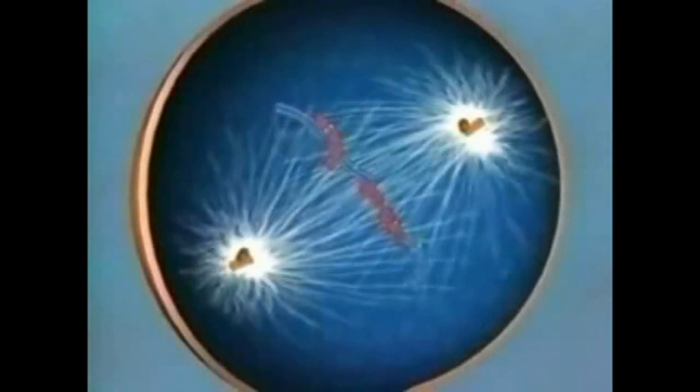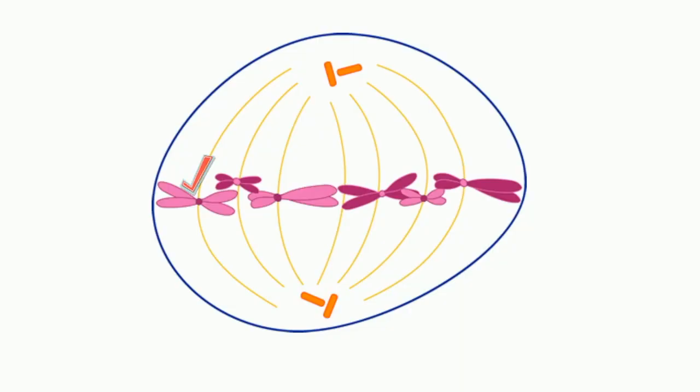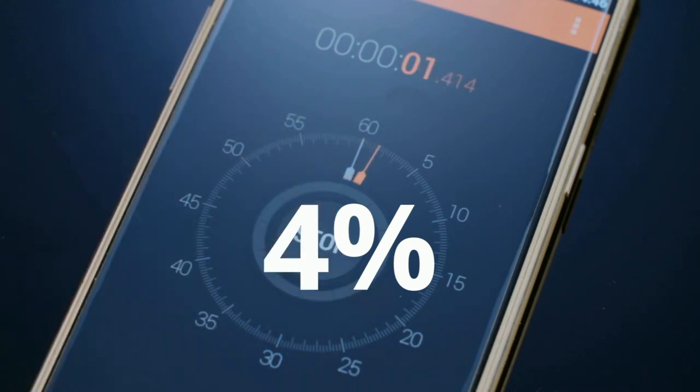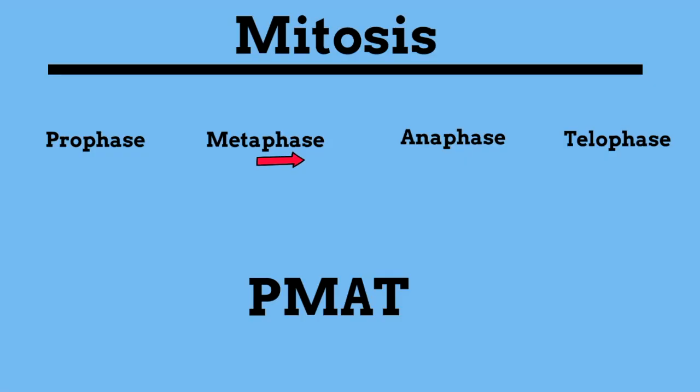Before proceeding to anaphase, the cell will check to make sure that all the chromosomes have their connector cords correctly attached to the microtubules. This is called the spindle checkpoint, and it helps ensure that the sister chromatids will split evenly between the two daughter cells when they separate in the next step. Metaphase takes roughly 4% of the time required for the completion of the cell cycle. After metaphase, the cell will move into anaphase and will begin separating the chromosomes.